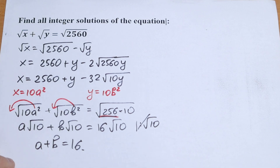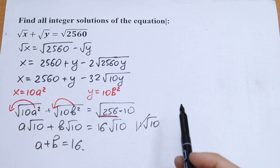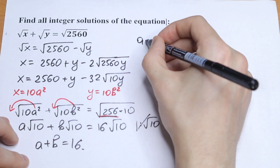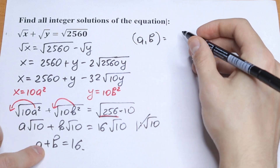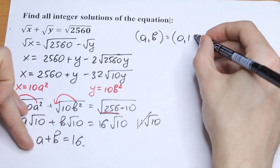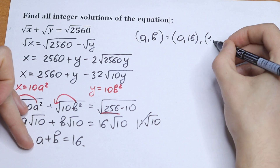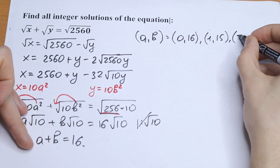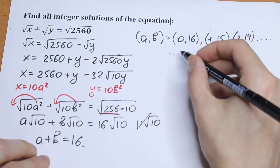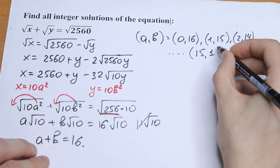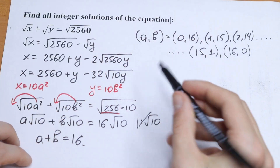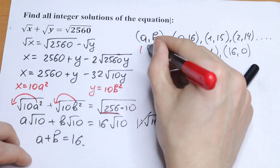So a plus b equals 16, which gives us 16 cases. The pairs we can have — where the sum equals 16 — are: the first pair (0, 16), the second pair (1, 15), the third pair (2, 14), and so on, all the way to (15, 1) and the last one (16, 0). So here we have 16 solutions.